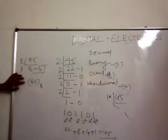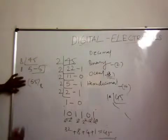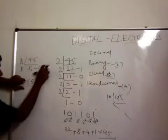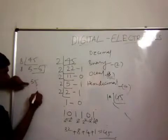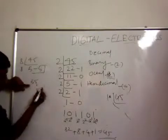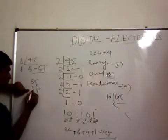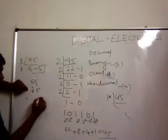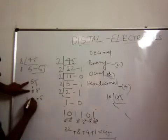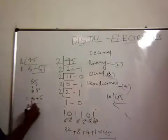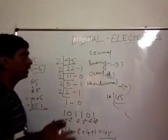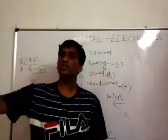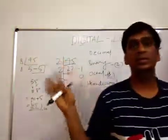In the same way for octal: 55 base 8 — multiply the rightmost digit by 8^0 and the next digit by 8^1. So 5×1 = 5 and 5×8 = 40, giving 45. For hexadecimal, the same method applies — multiply with 16^0, 16^1, 16^2, 16^3, and so on.